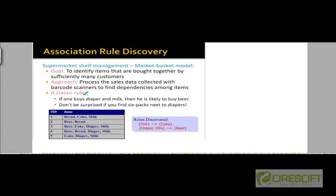An example of a rule that could be discovered by mining this data is: customers who bought milk also tended to buy coke. Another example: customers who bought both diaper and milk had a high probability of buying beer also. So if one buys diaper and milk, then one is also likely to buy beer.